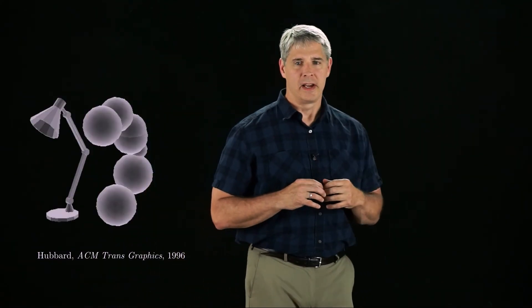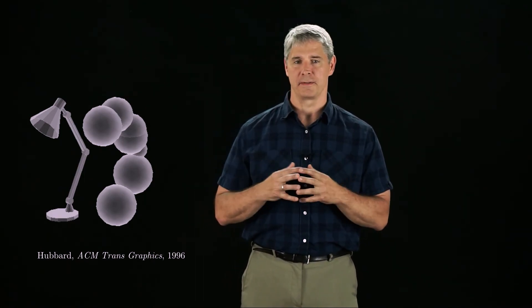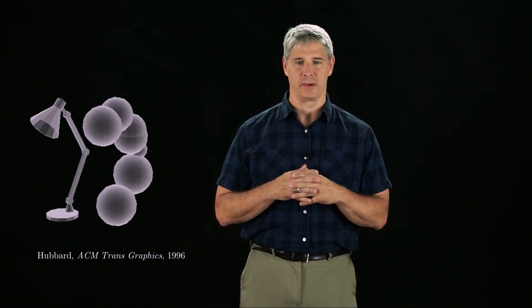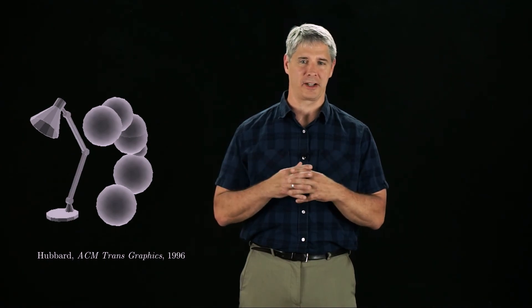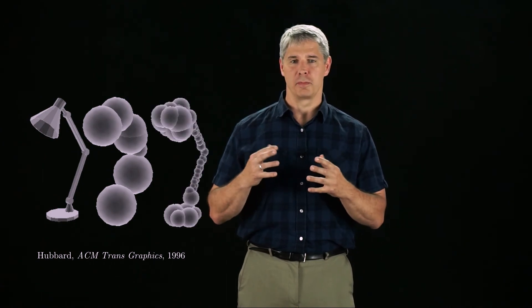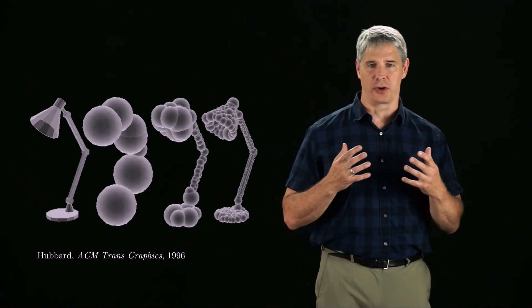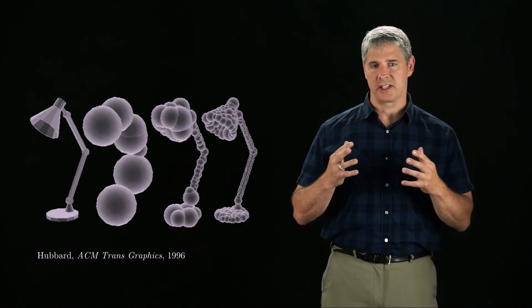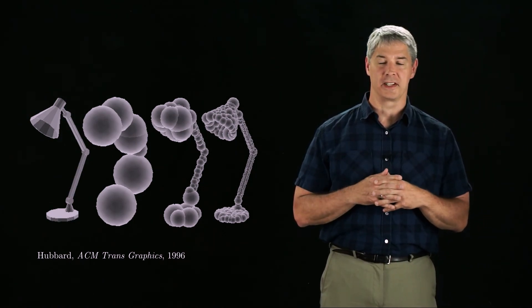An even simpler way to check for collision between two objects is to approximate each by a set of spheres. Here is a lamp approximately represented as the union of spheres. Checking whether two objects collide is then as simple as checking the distance between the centers of the spheres of the two objects, which can be done very quickly. The actual object should be strictly inside its sphere approximation to make sure that we don't declare a particular configuration to be free when it is actually in collision. If we use more spheres, we can represent the object more precisely. This makes collision detection less conservative, but increases the number of distance checks.